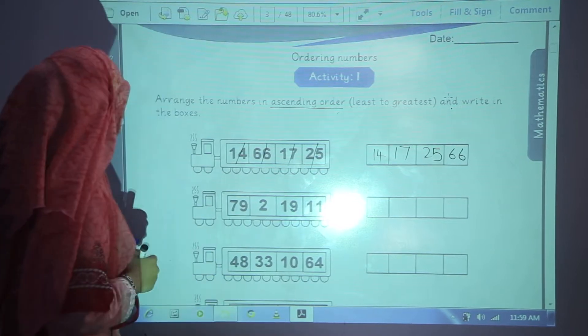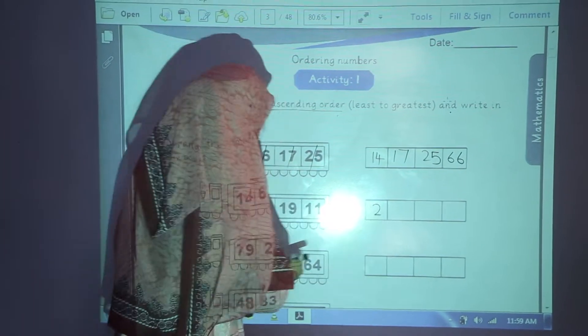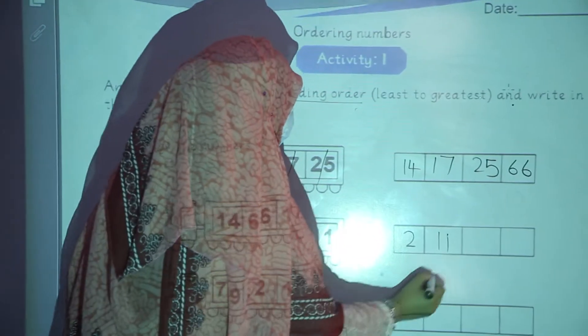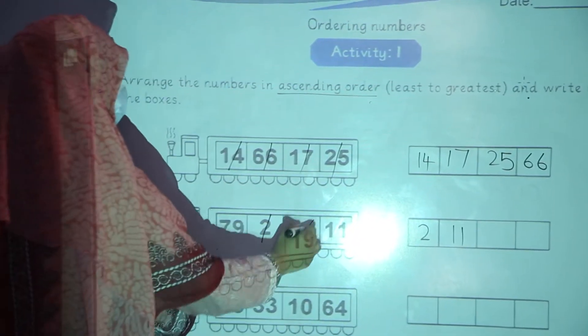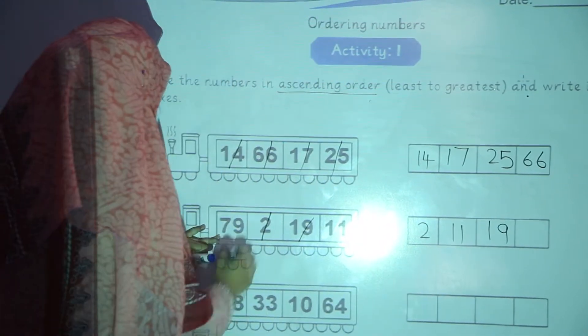In question number 2, 2 is the least number. You will write it in the first box. After 2, 11. You will write it in the second box. After 11, 19. You will write it in the third box. And after 19, 79.